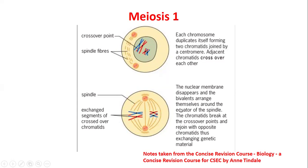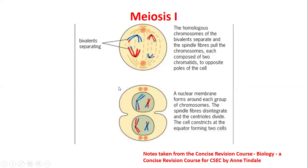The nuclear membrane disappears and the bivalents arrange themselves around the equator of the spindle. The chromatids break at the crossover point and rejoin with the opposite chromatids, thus exchanging genetic material. We can see a little bit of red on the blue chromosome and a little bit of blue on the red, showing that the genetic makeup has been exchanged.